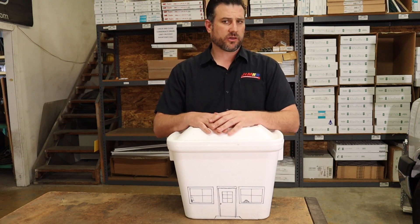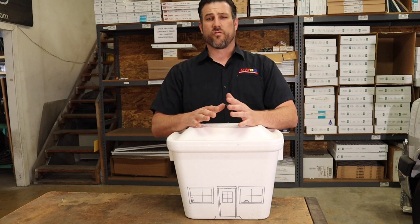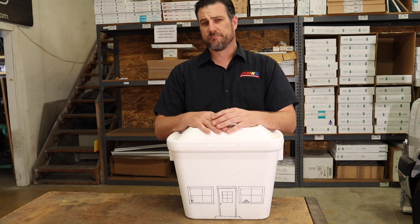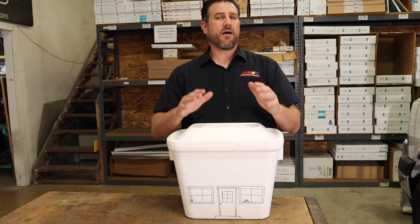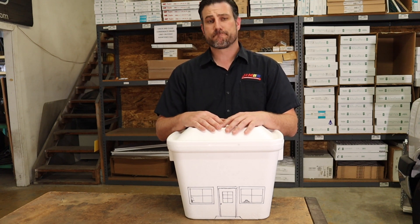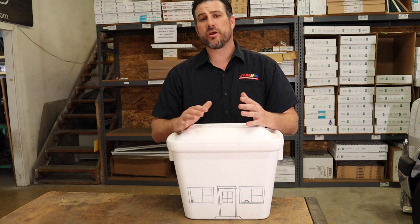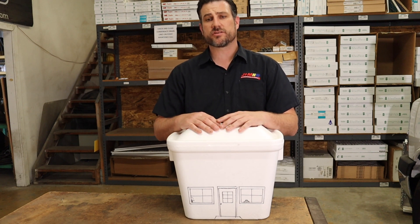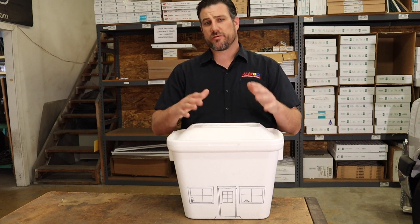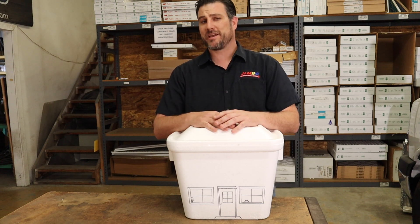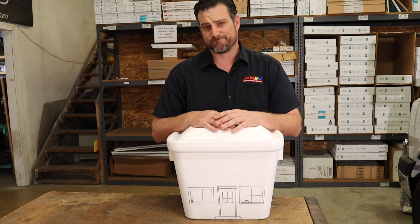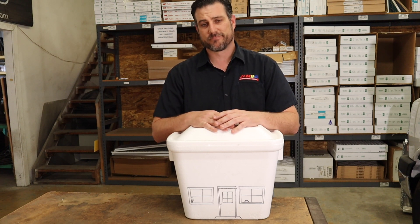Avoid online load calculations that are oversimplified. Avoid rules of thumb like 400 square feet per ton. Ask for a 100% satisfaction guarantee. And if you're in the Riverside County area in California, hire J&M Air Conditioning — that's the easiest way to do it.